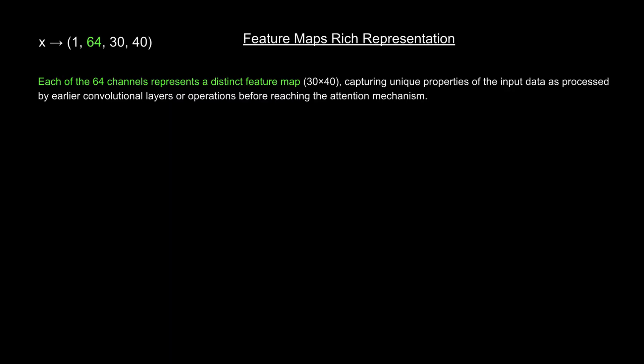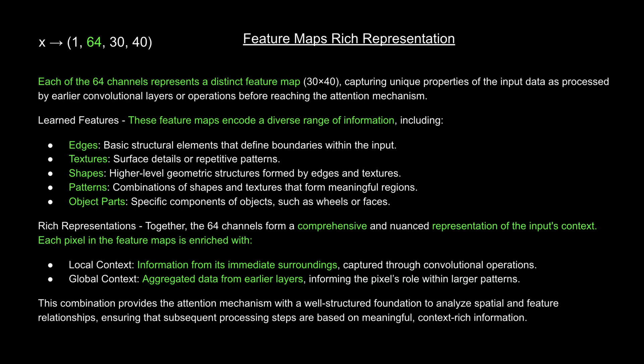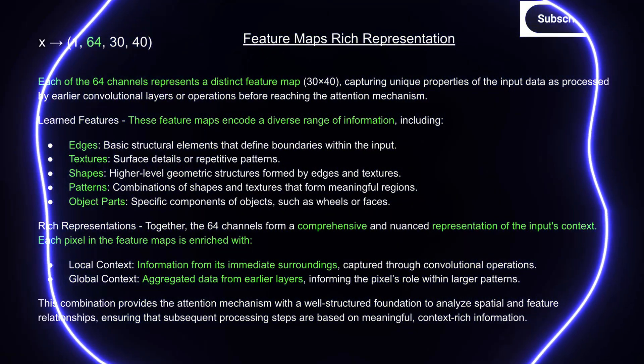Now, what do these feature maps actually represent? As you may have guessed, each of the 64 channels captures distinct features of the input image. These features were extracted by the earlier convolutional layers before the data reaches the attention mechanism. Let's break this down. These feature maps capture diverse aspects of the input, from edges and textures to shapes, patterns, and even specific object parts like wheels or faces. Together, the 64 channels build a rich and detailed representation of the image, where each pixel carries both local context from its surroundings and global context from deeper layers. This layered understanding sets the stage for the attention mechanism to analyze spatial and feature relationships more effectively.